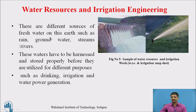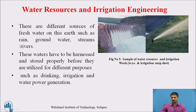The next sub-branch is Water Resources and Irrigation Engineering — used in dam sites and for crop irrigation. There are different sources of fresh water on earth: rainfall, groundwater, and rivers or streams — both surface and subsurface sources. Water has to be harnessed and stored properly before being utilized for drinking purposes, electricity generation, irrigation, and crop production.